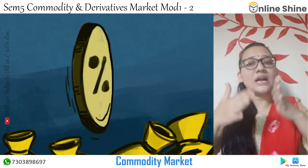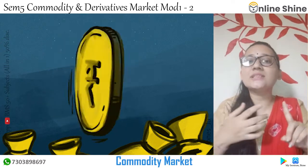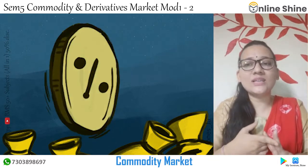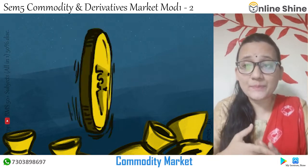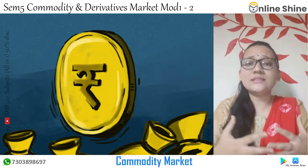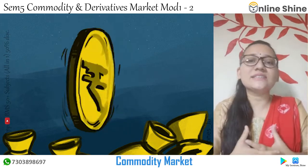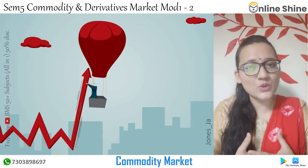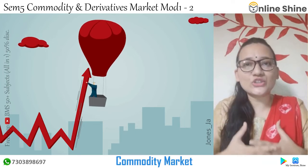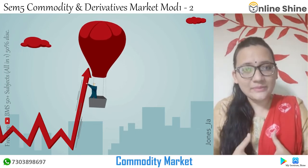When we talk about the Regional Exchange, there is the National Board of Trade, and the second category includes other Regional Markets. Different states have their own regional stock markets. So this is the overall structure of the Commodity Market.